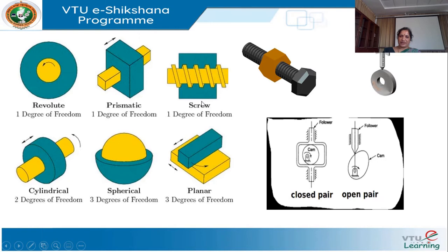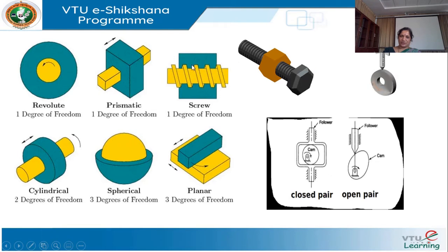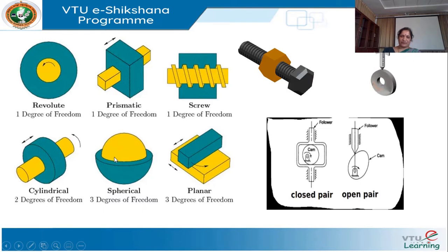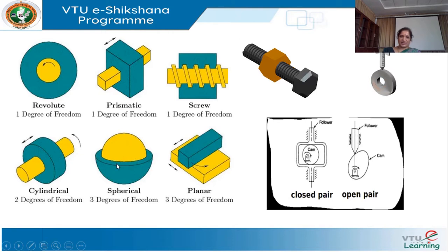The screw pair or helical pair has grooves on the surface — one is hollow and the other is solid, like a screw. The last type is the spherical pair, where the example is a ball and socket joint. The socket is one part and the ball is the other. It has three degrees of freedom, which we will discuss later.